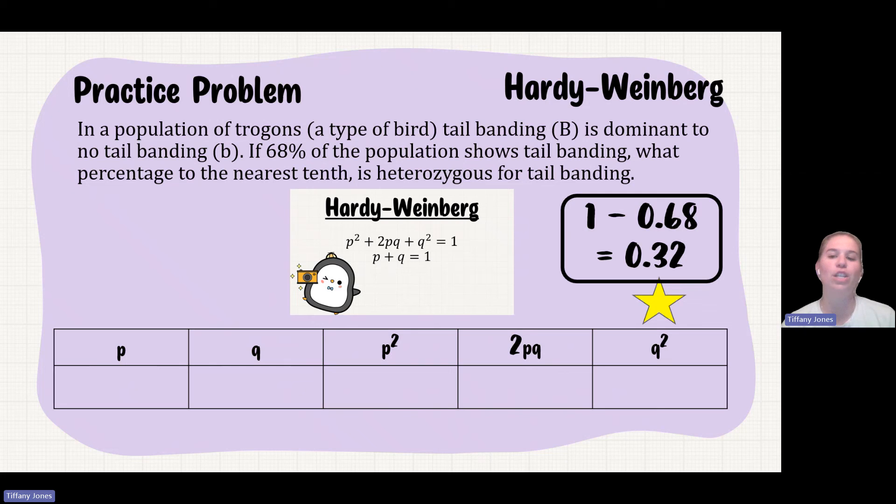Because I need to figure out what is Q². The reason I have to start out this way is because if I'm given the dominant trait, that dominant trait can either be homozygous dominant or it can be heterozygous. So in order for me to do this calculation, I have to actually start with that Q². So my Q² is 0.32.